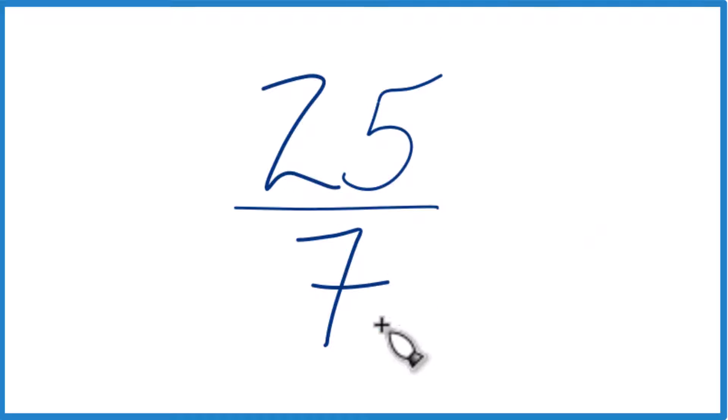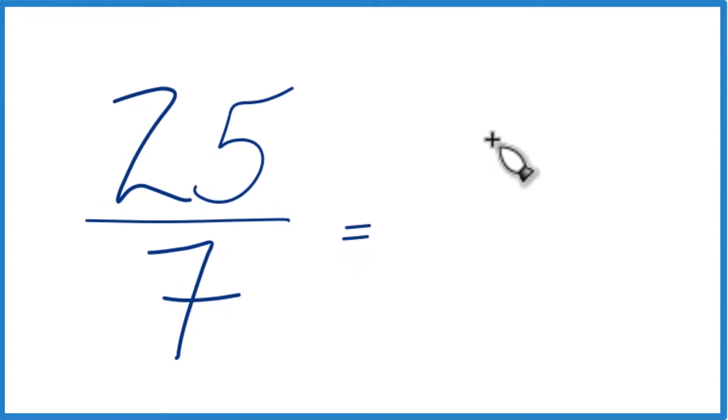So 7 times 3 is 21. 7 times 4 is 28, so that's too much. So I'm going to have a whole number here of 3. 3 times 7 is 21.